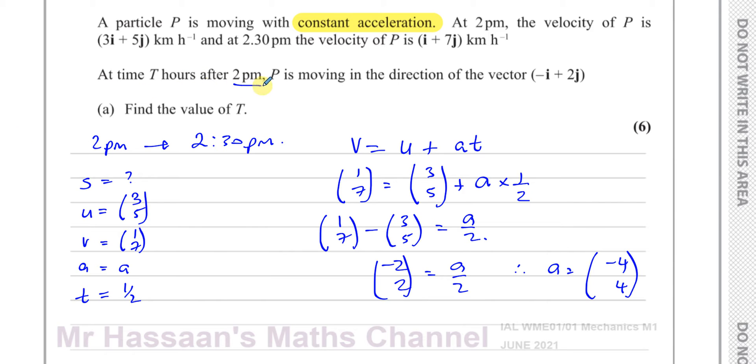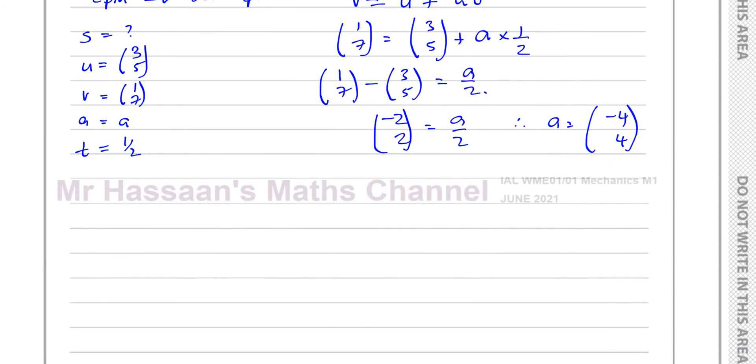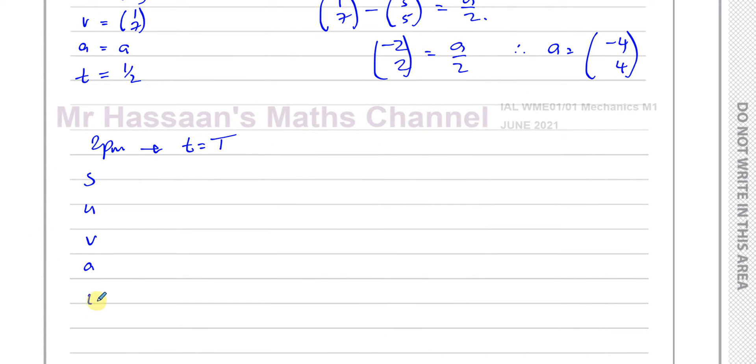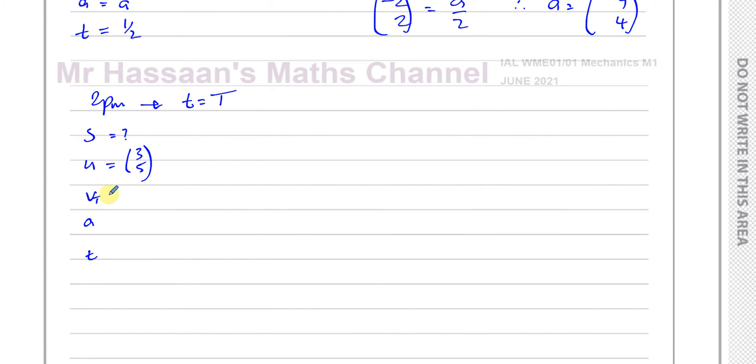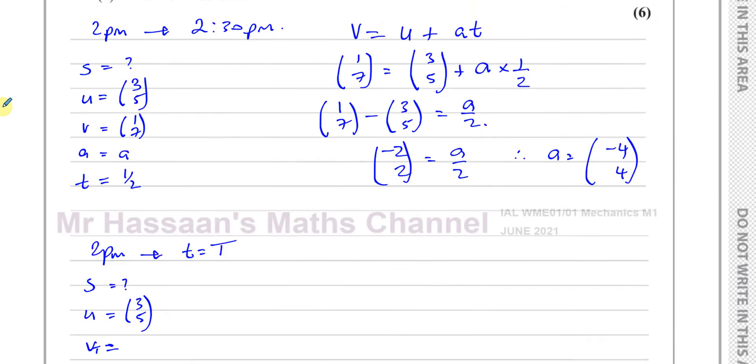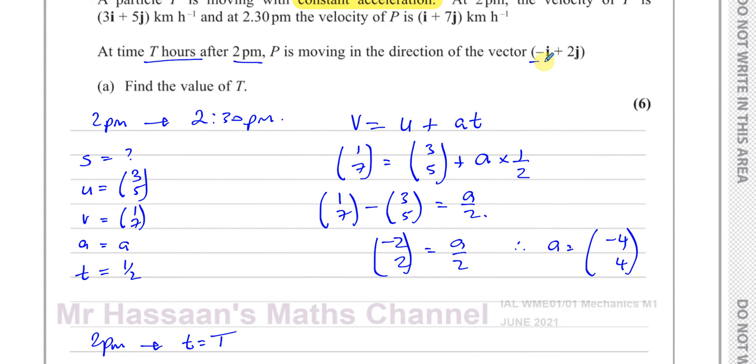Now I can consider between 2pm and capital T hours. Again, I can use SUVAT, constant acceleration, and this time I know the acceleration already. I know the initial velocity at 2pm was 3, 5. Now the velocity at T hours, well, we don't know the actual velocity, but we know the direction of the particle is minus i plus 2j. Remember, velocity is a vector quantity which has a magnitude and a direction.